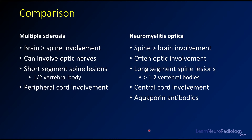For comparison, when looking at multiple sclerosis versus NMO: for MS, the brain tends to be involved more commonly, with greater brain involvement than the spine, whereas for NMO it's flipped. MS does frequently involve the optic nerve, so both can really involve the optic nerves. MS tends to involve shorter segments of the spine — maybe half a vertebral body or less — whereas NMO tends to have longer segment lesions. The central cord is more likely to be involved in NMO versus MS, which tends to be more peripheral. The aquaporin antibodies on clinical testing is really the key to diagnosing NMO.